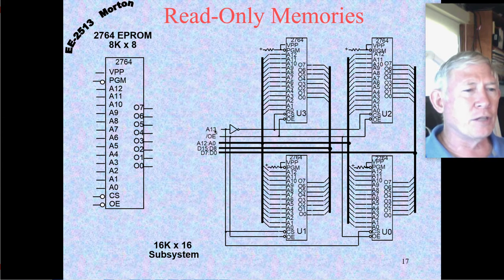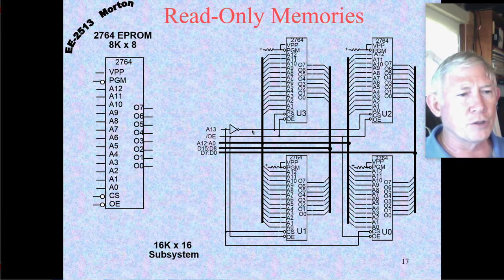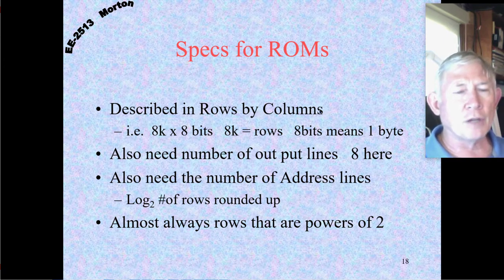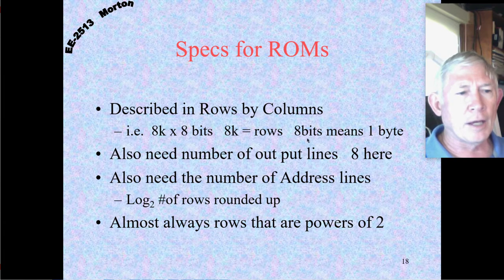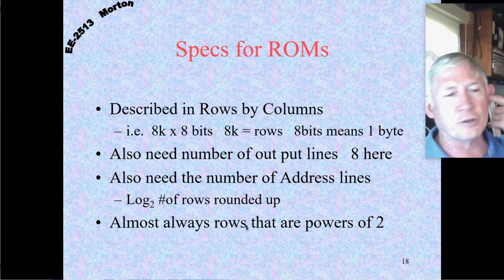And of course, A13 is not implemented on the chips because it's implemented here with the chip enable and chip selects. Whenever we specify a ROM, we specify the number of rows and the number of columns. The number of rows is always a power of two. The number of address lines is the log base 2 of the number of rows. In this case with 8K, you need 13 bits of address — address lines A0 through A12.